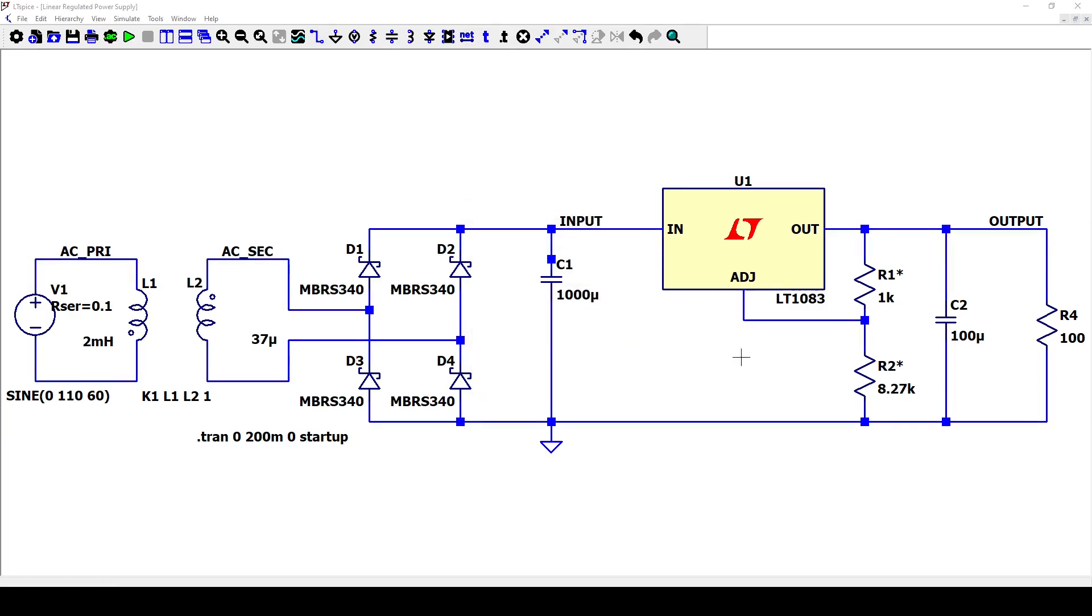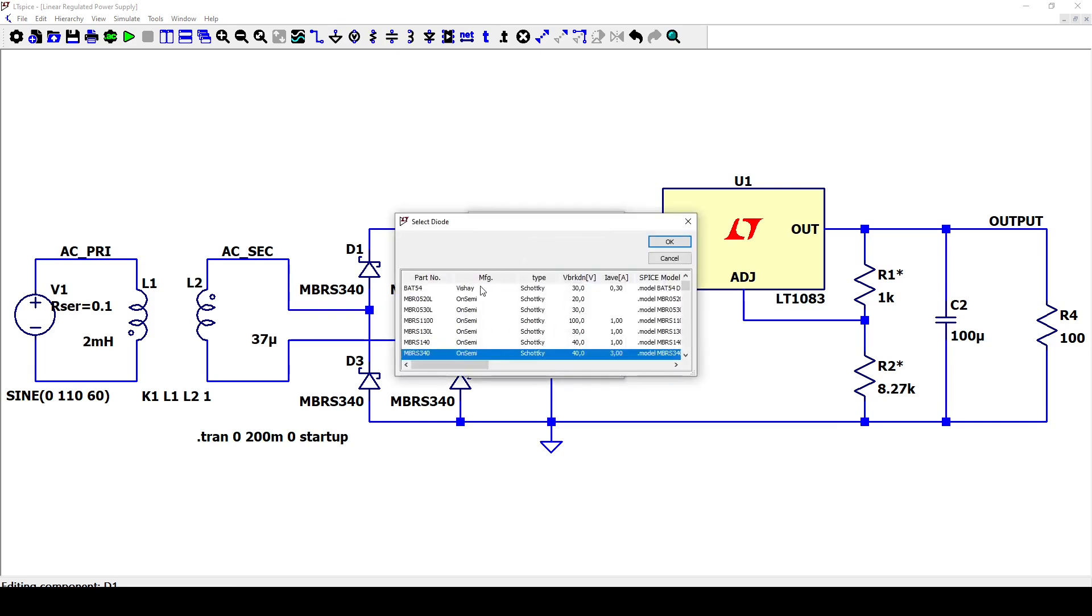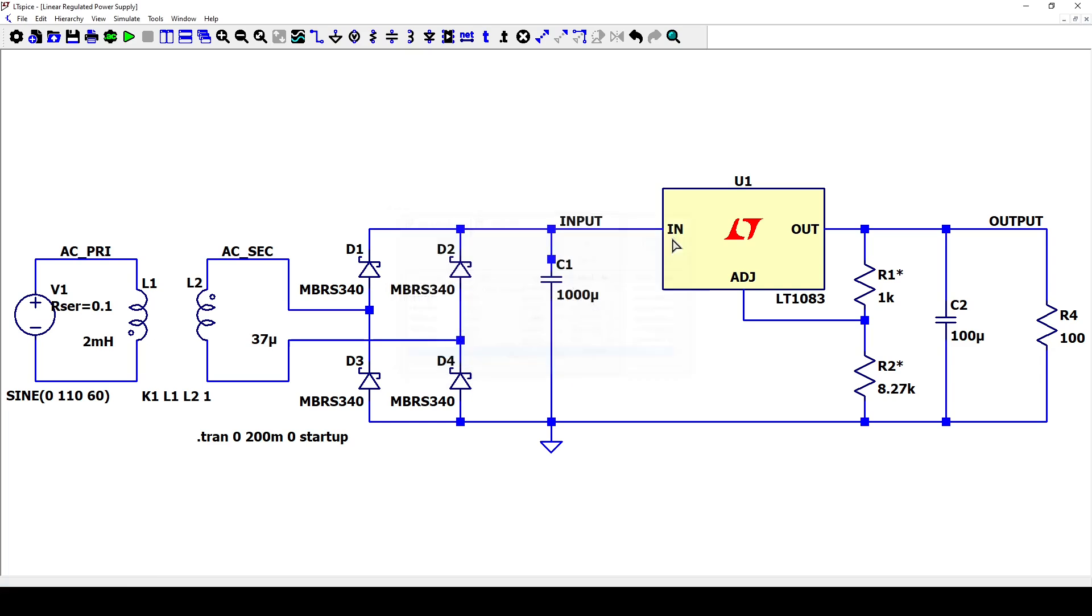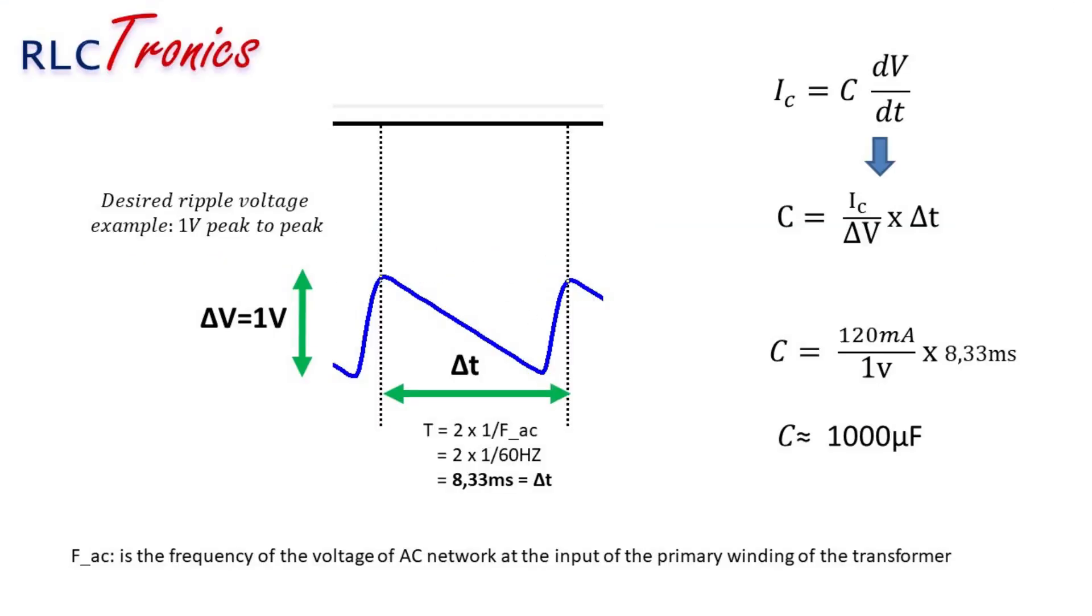For the rectifier, let's just take some diodes available in library. The value of the bulk capacitor depends on the current of the load, the frequency, and the desired ripple voltage. Let's consider 1000 microfarads.